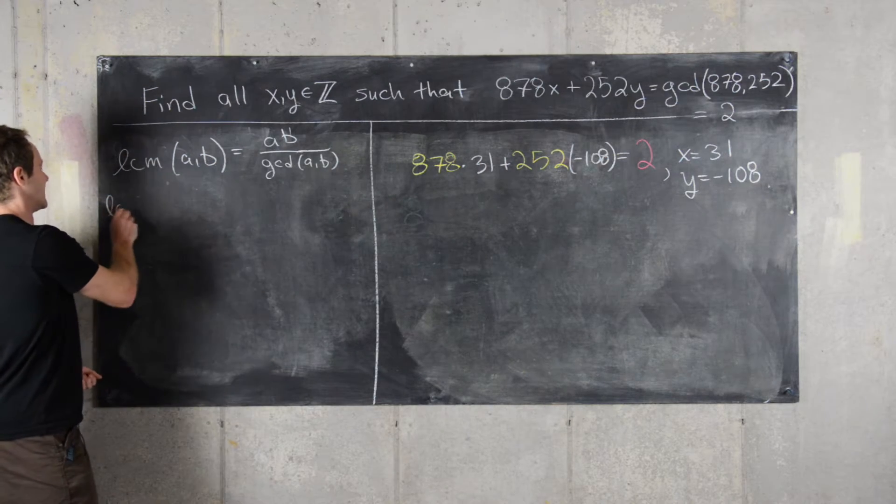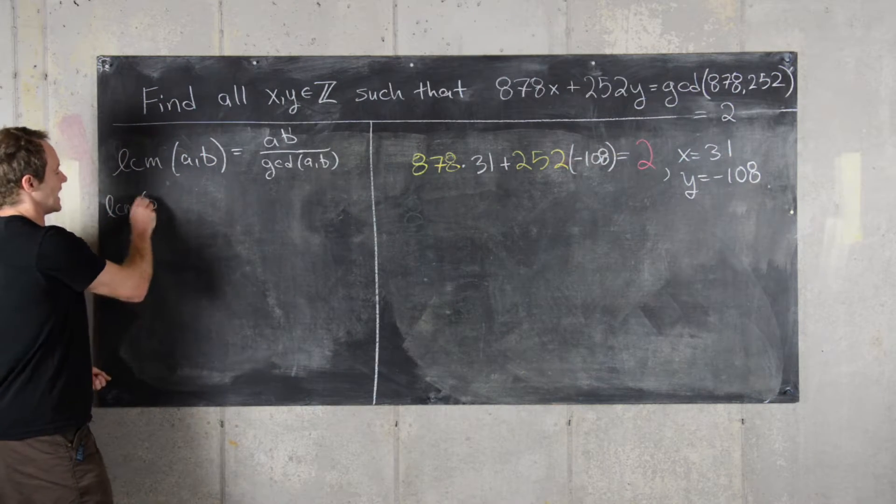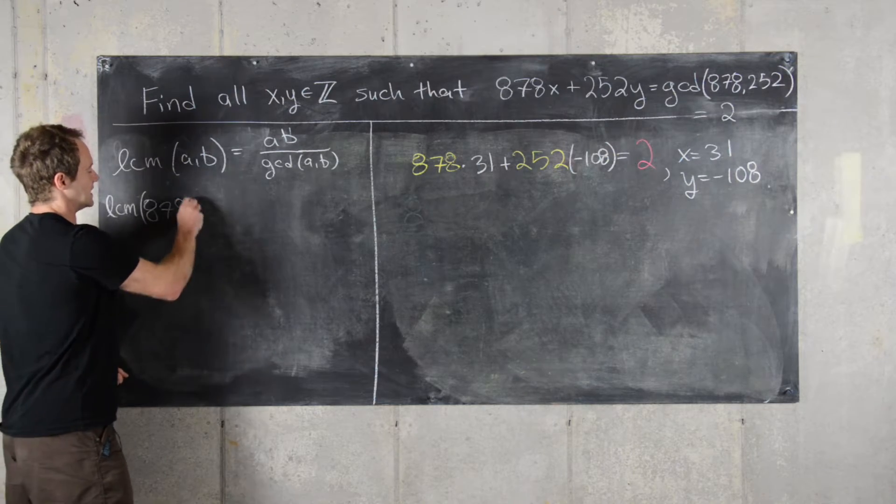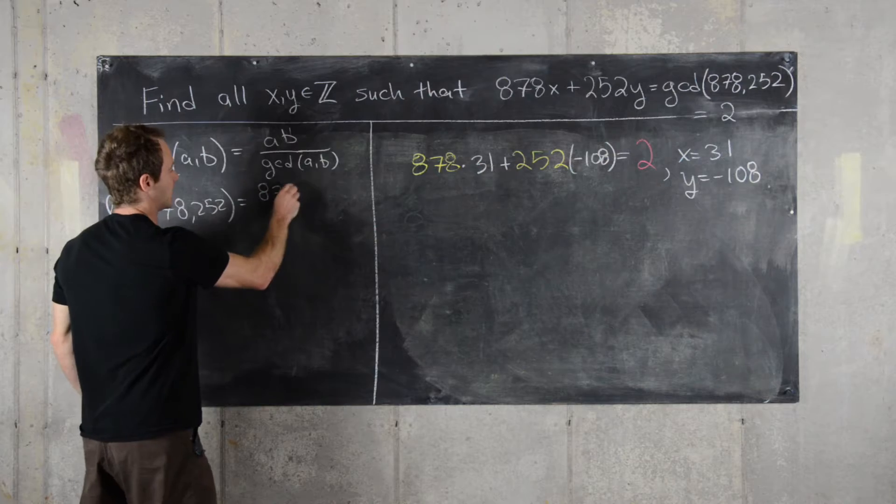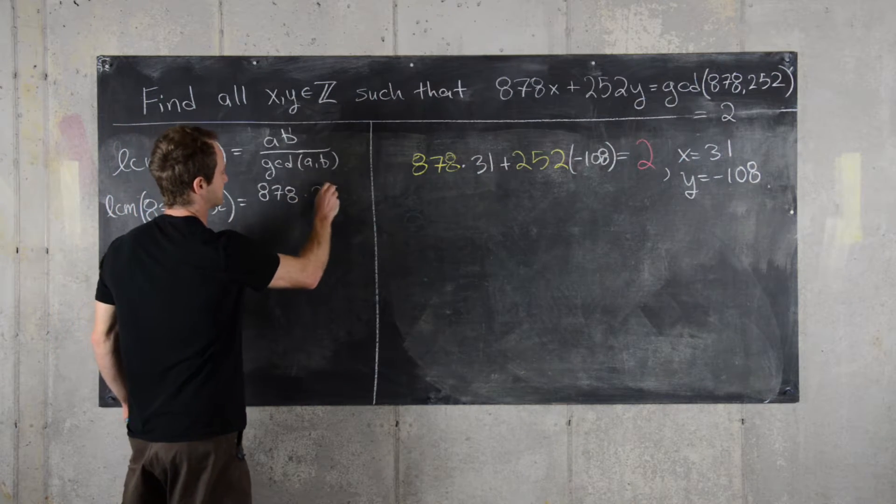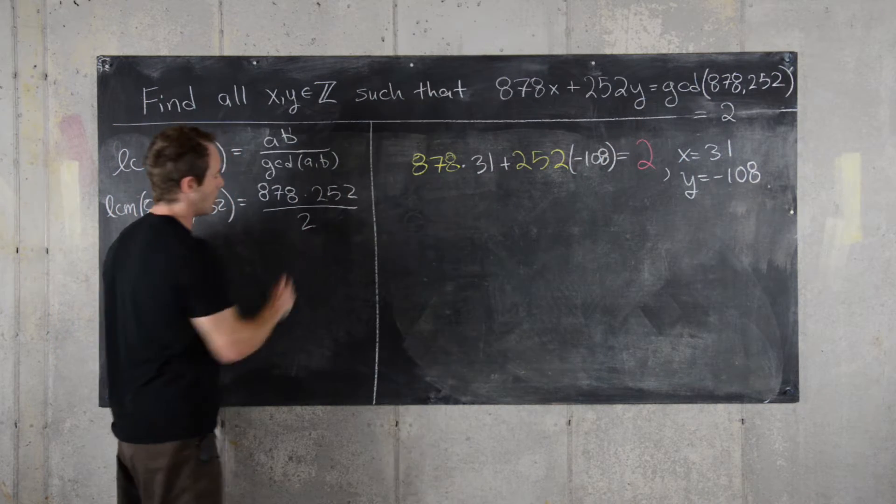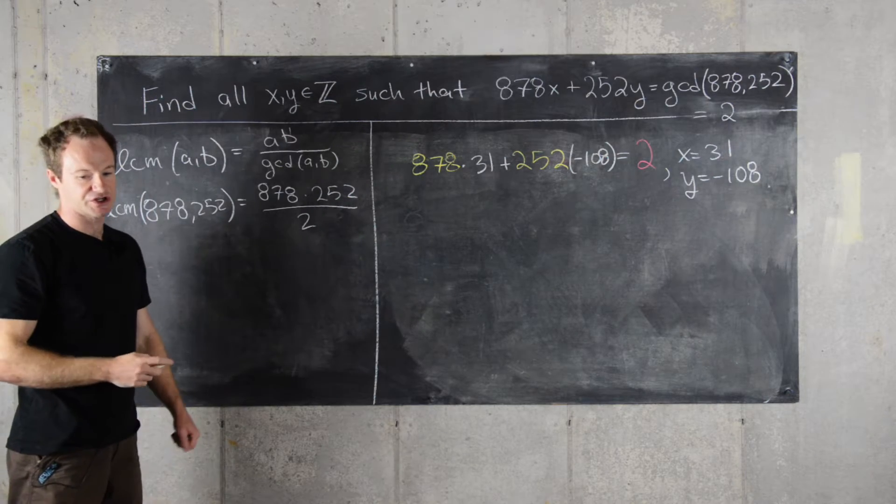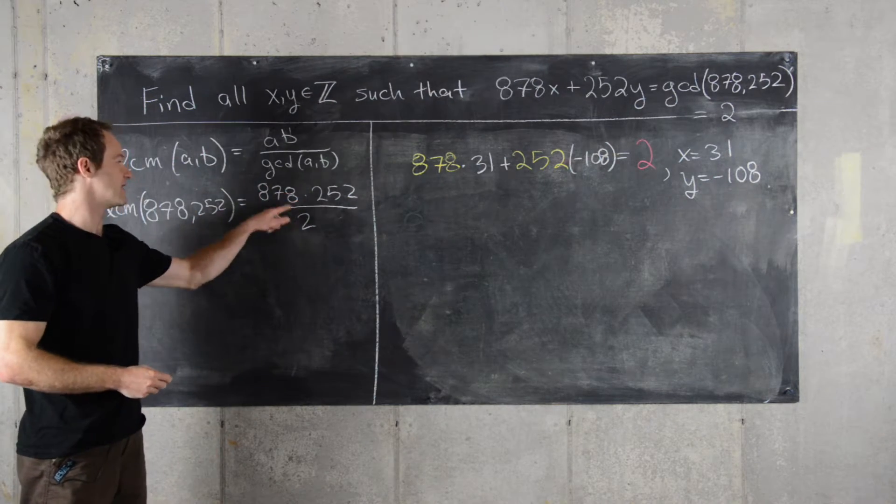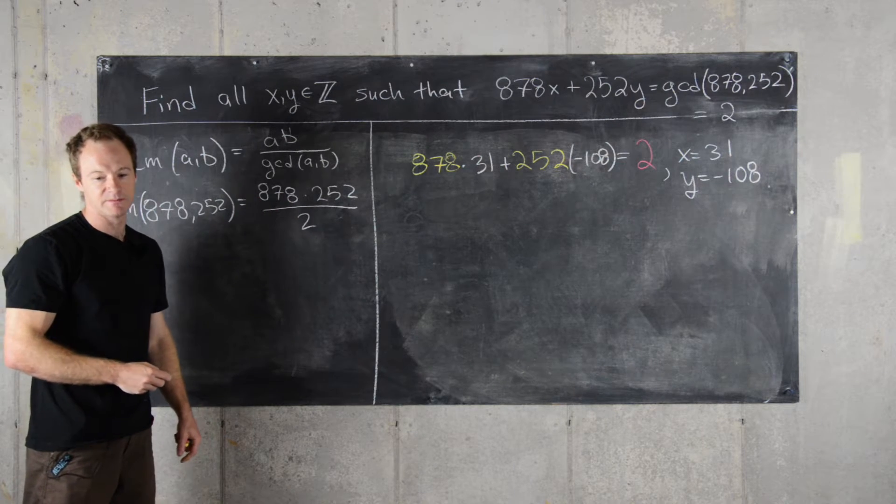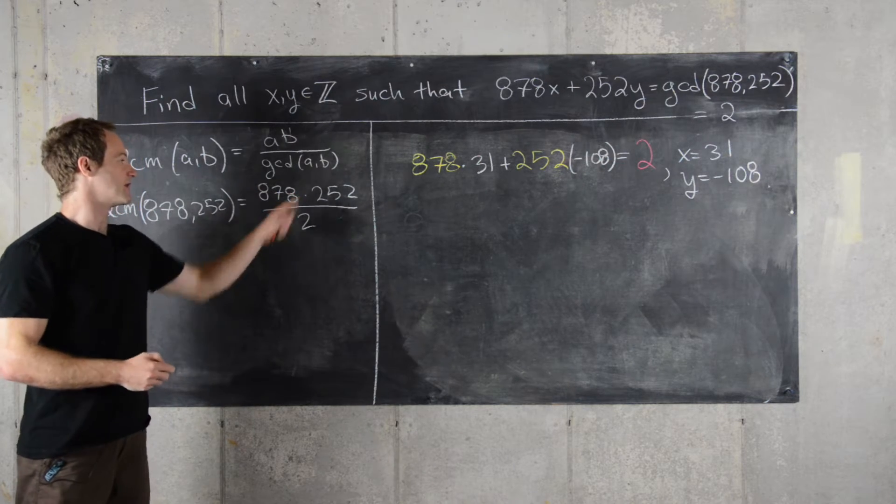So in our case, we have the LCM of 878 and 252 equal to the product over the GCD, which is 2. So in fact, I don't even need to multiply this together. I will say that it's 110,628, but that's not even what I need in this case.